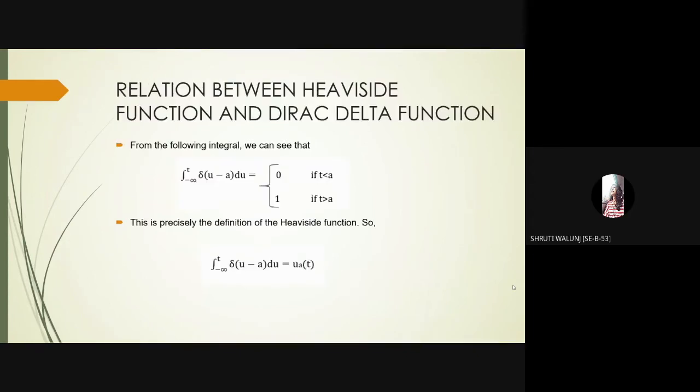We have also included a relation between Heaviside function and Dirac delta function. From the following integral, we can see that integration minus infinity to t delta of u minus a du is equal to 0 if t is less than a, and it is equal to 1 if t is greater than a. This is precisely the definition of Heaviside function. So we can write integration minus infinity to t delta of u minus a du is equal to u_a of t.